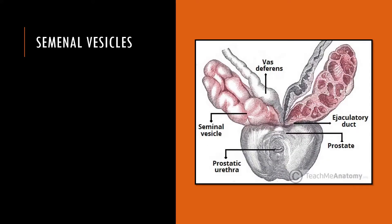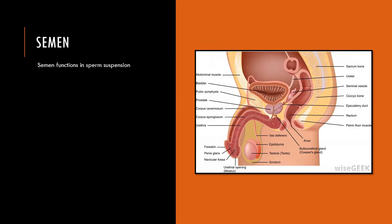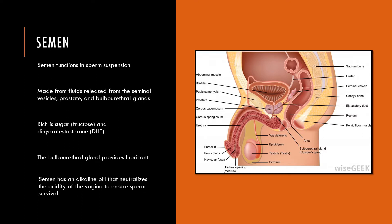There are several accessory organs of the male reproductive system that serve to neutralize the acidity of the vagina, one of which is the seminal vesicles, which store and produce semen. Semen functions in sperm suspension and is made from fluids released from the seminal vesicles, the prostate, and the bulbourethral glands. Semen is rich in sugar — mostly fructose — and also rich in dihydrotestosterone. The bulbourethral gland provides a lubricant. Semen has an alkaline pH that neutralizes vaginal acidity to ensure sperm survival, and sperm won't be able to move without the semen.